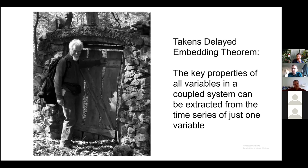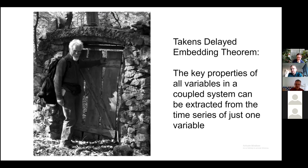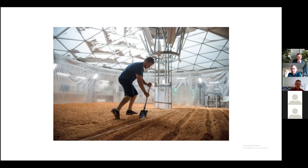To be clear, Takens is not saying that all variables are coupled to each other — it's not a claim about the interconnectedness of all things. What he's saying is that if variables are coupled, then you can extract the dynamics of the entire system from any one of those variables. For instance, potato farming on Mars would not be expected to be coupled with the Christmas party — so we're not saying you can measure Matt Damon and figure out what's happening at this party. The variables have to actually be coupled for the theorem to pertain.